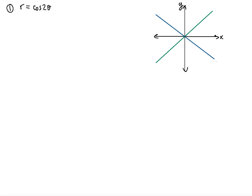Now let's analyze the function. At θ = 0, r = cos(2 × 0) = cos(0) = 1. So at angle theta = 0, the radius value is 1.